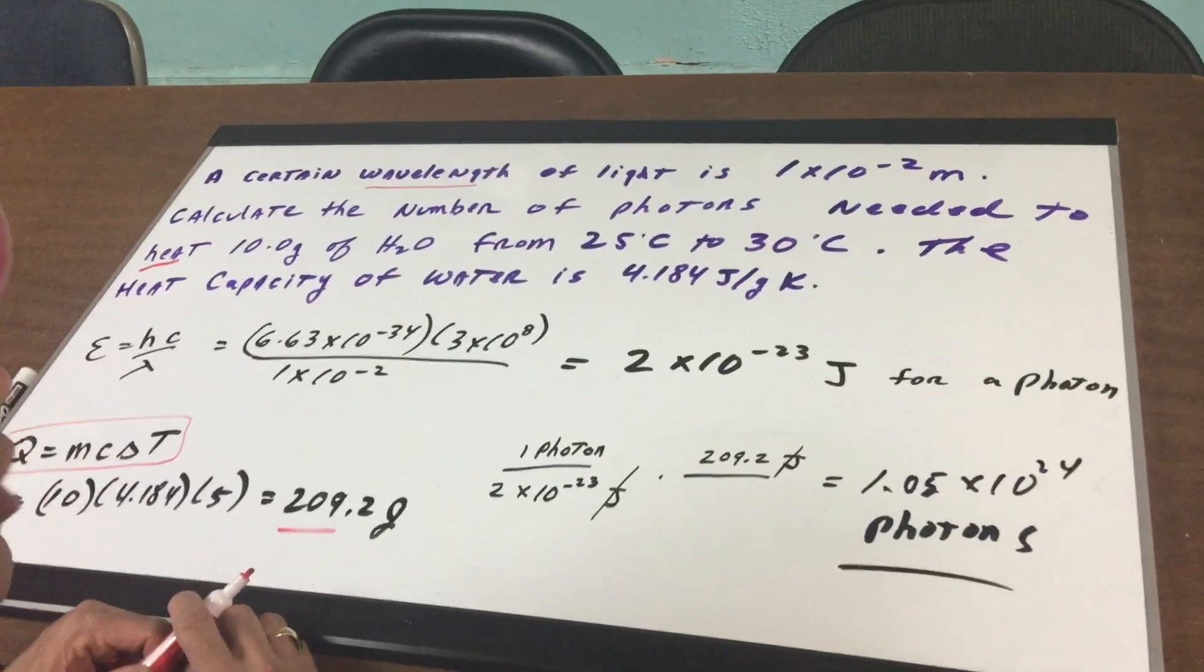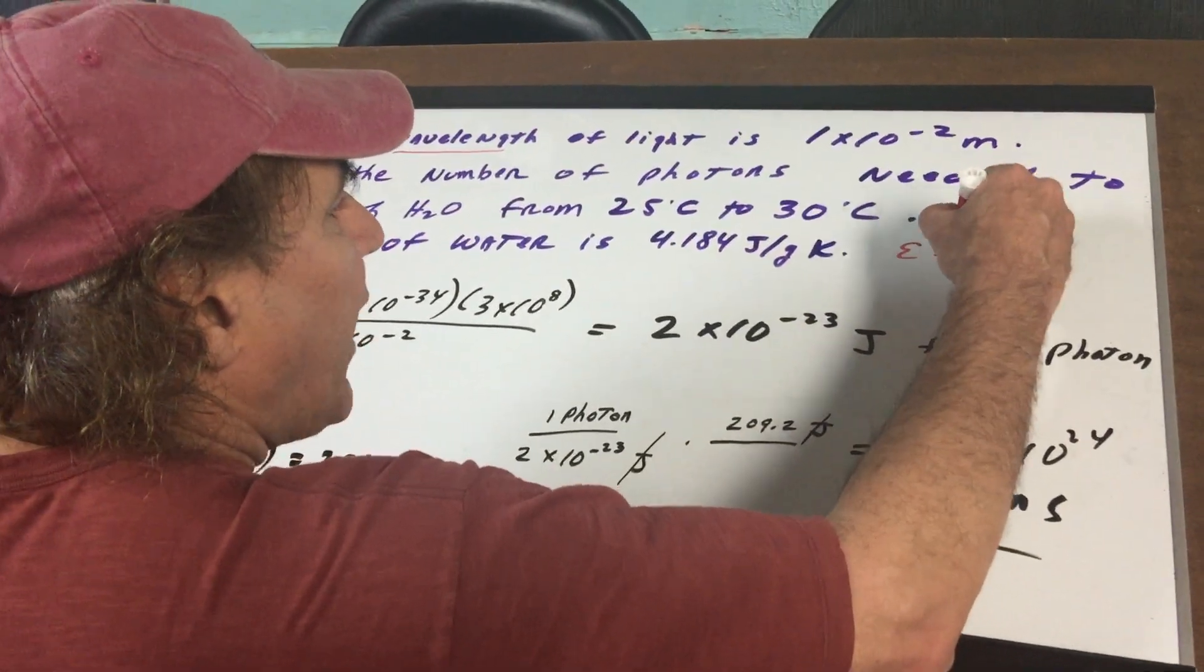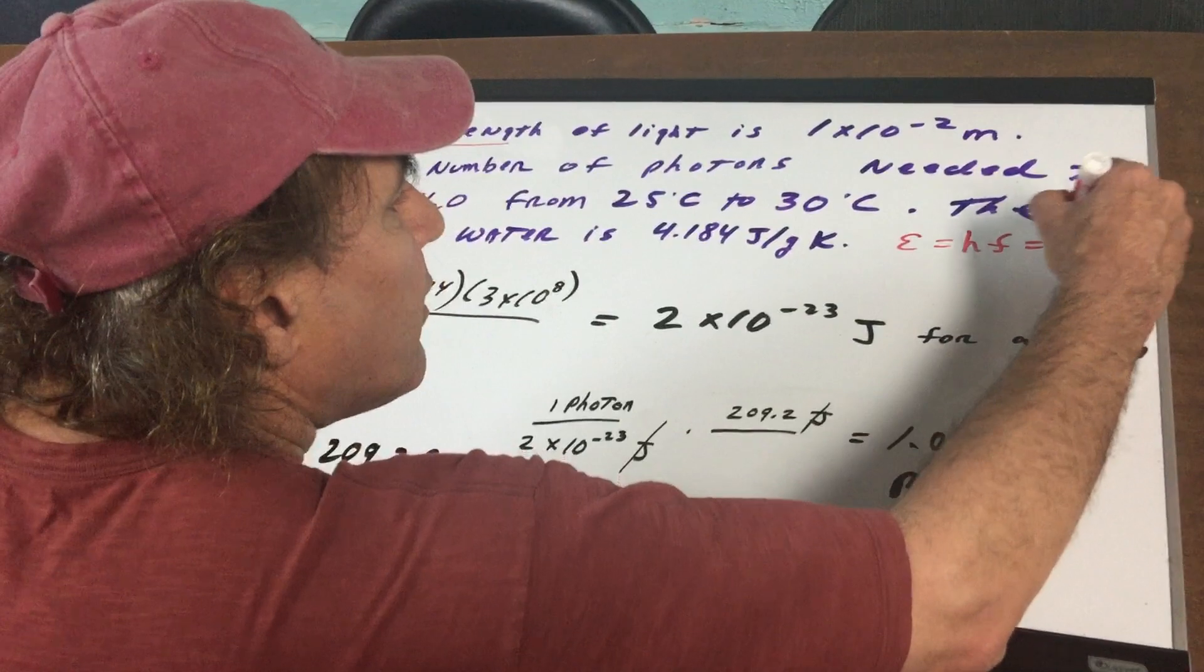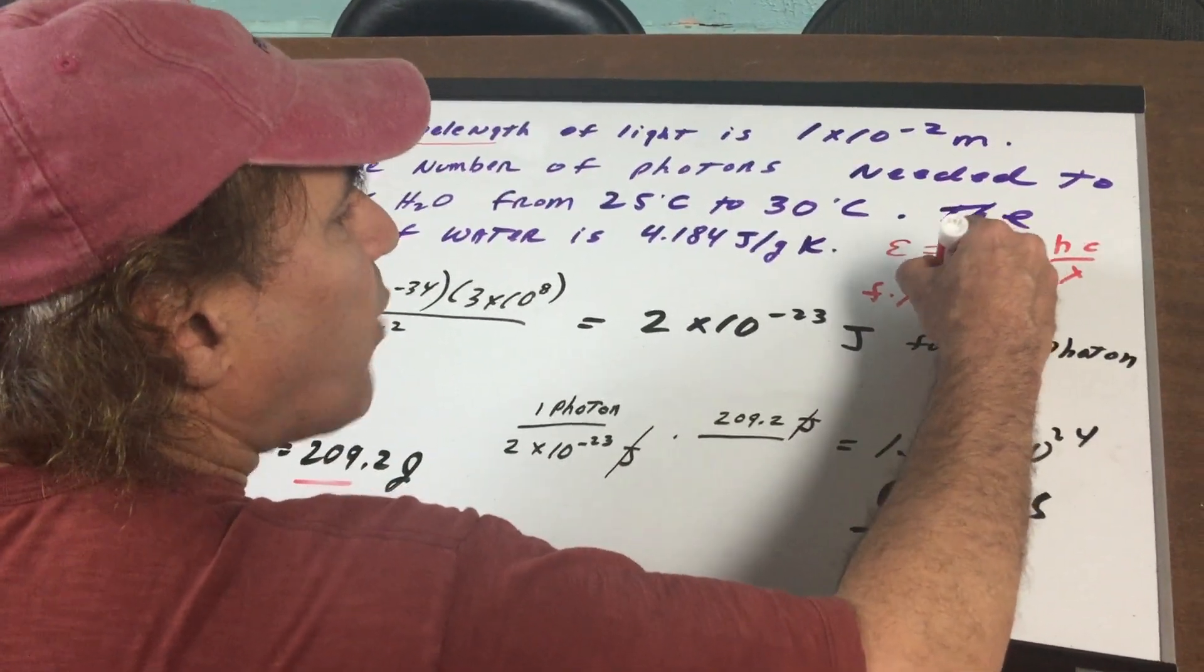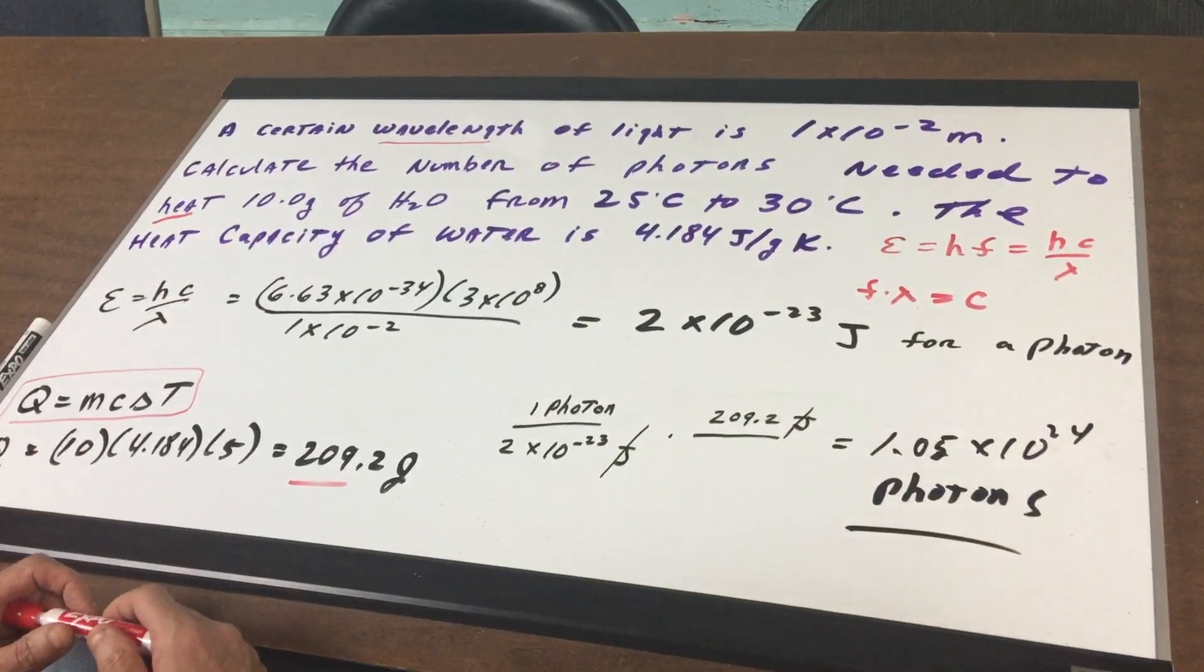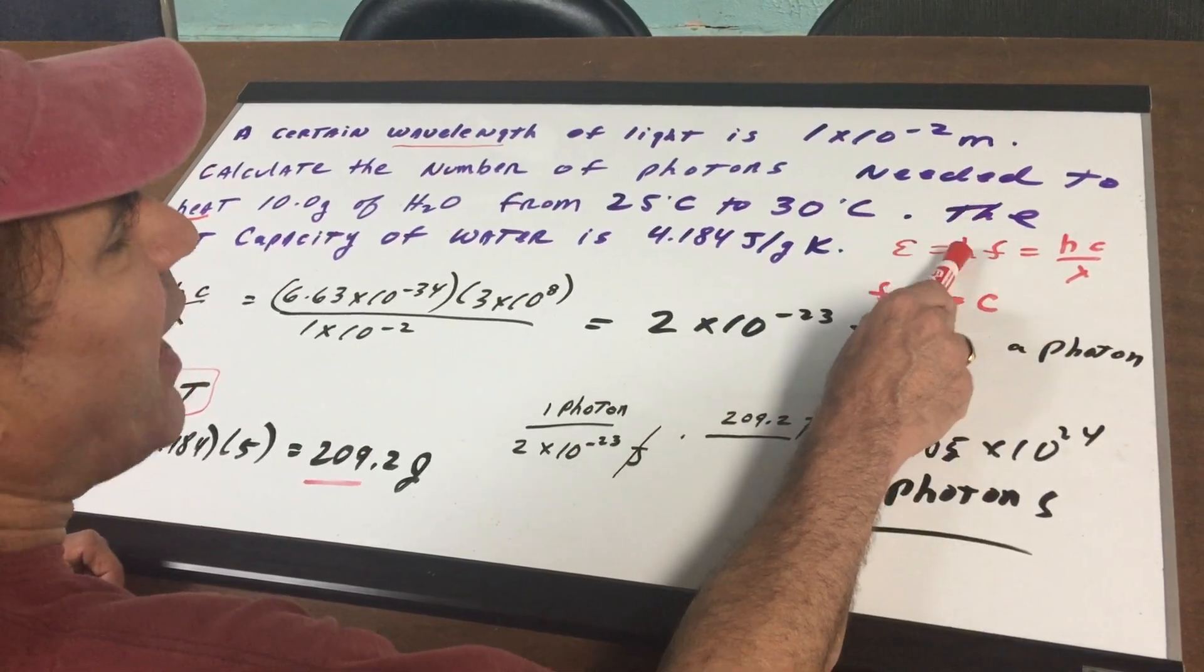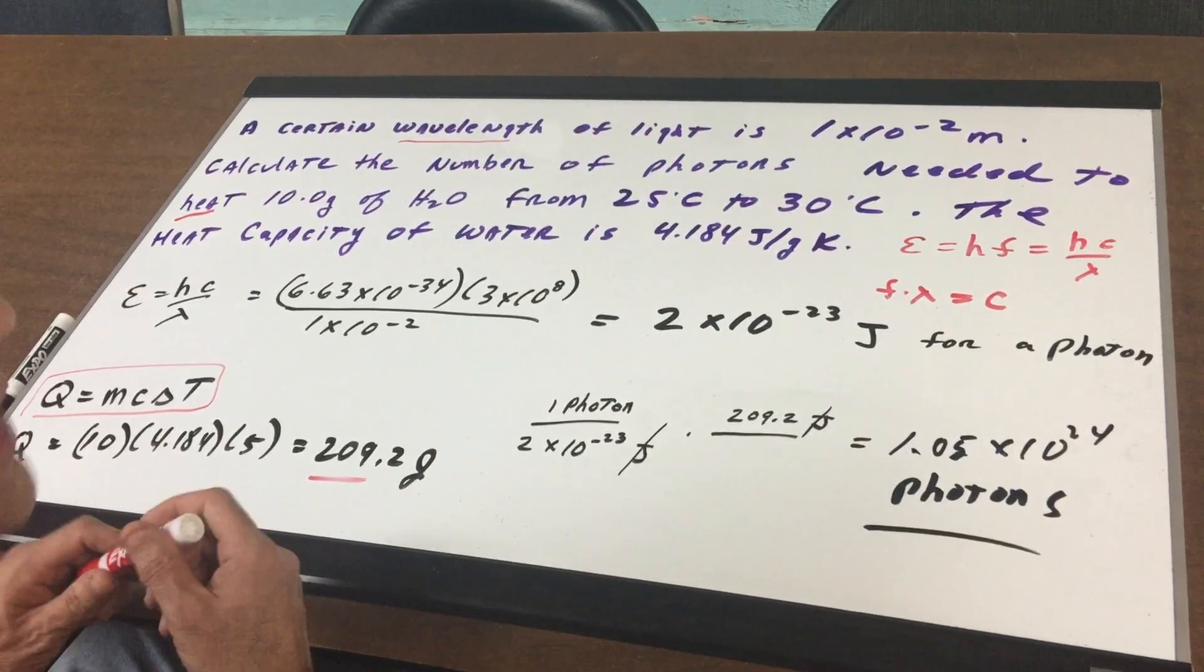You want to make sure you remember for the DAT exam, you want to know that energy equals HF. Energy is also HC lambda. And finally, frequency times wavelength equals the speed of light. These are your three equations you should bring into the DAT. Don't forget, H is the constant, Planck. C is the constant, the speed of light. These are given to you on the DAT exam.